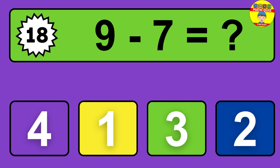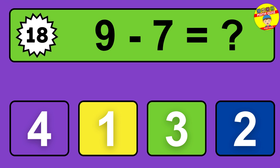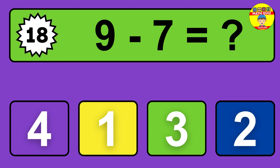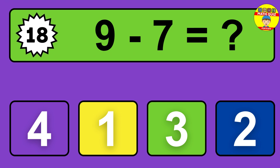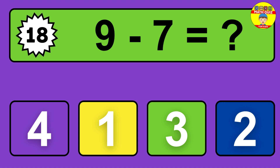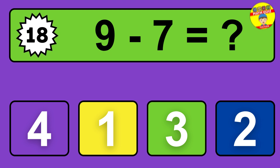Question nineteen: seven minus four equals what? So the answer is seven minus four is three. Let's count it — one, two, three.